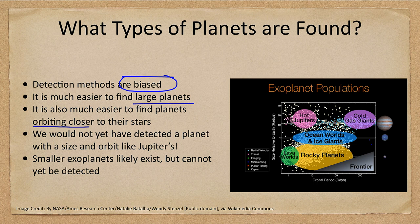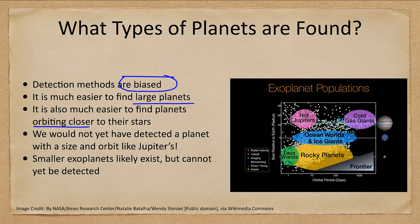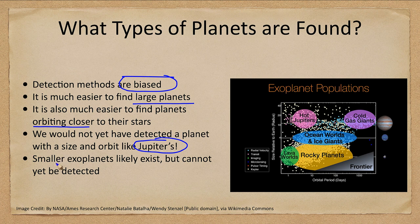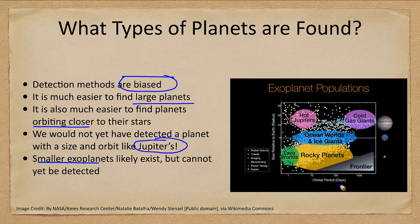With the methods we've talked about we would not have been able to detect a planet like Jupiter. There are also smaller exoplanets that likely exist. Those are on the frontier, those are hard to detect.